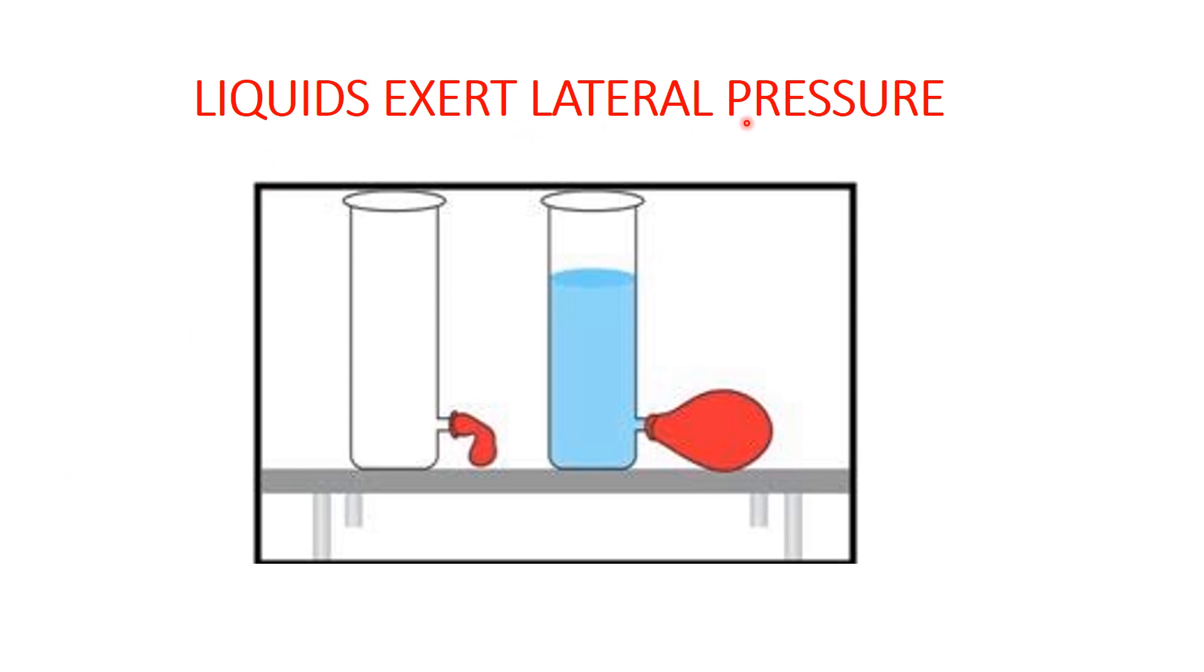Liquids exert lateral pressure. Lateral pressure means the pressure of the liquid on the sides of the container. Take a tube having an opening in its side and cover the opening with a balloon. Now pour water in the tube. You will notice that the balloon bulges outward. Add more water and the balloon bulges more. This activity shows that liquid exert pressure not only at the base of the container but also on the walls of the container. This sideways pressure is called lateral pressure.